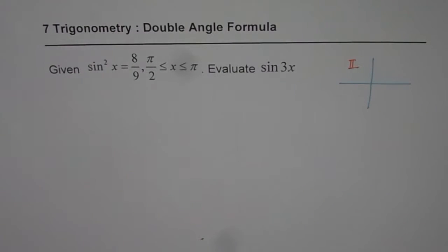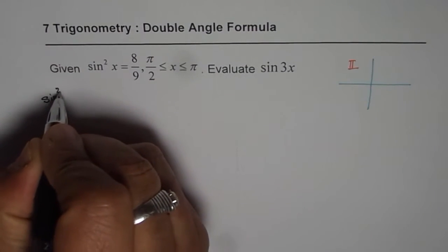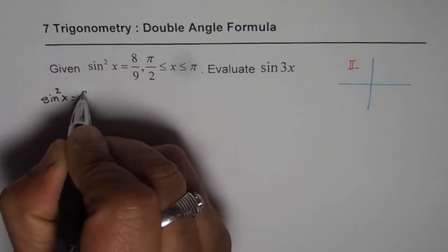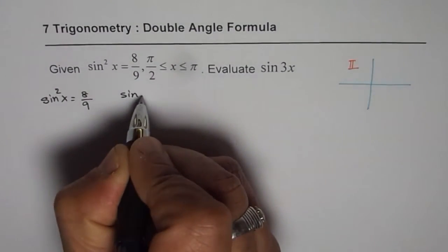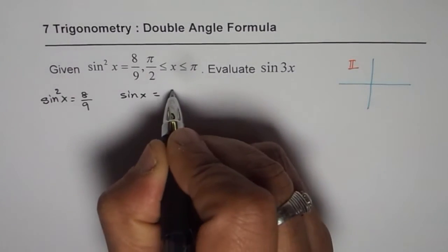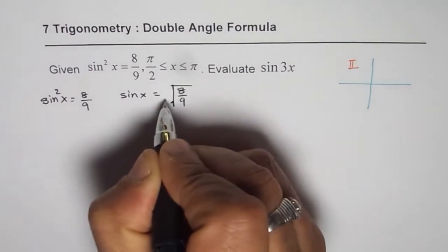So that really means if sin²x = 8/9, then sin x should be the square root of this. Whenever you do square root, you have to do plus and minus.